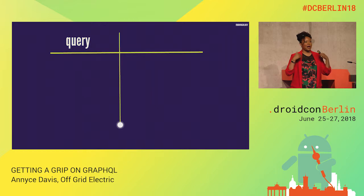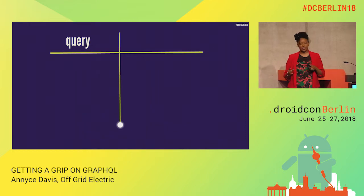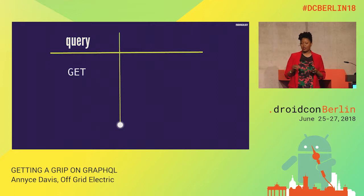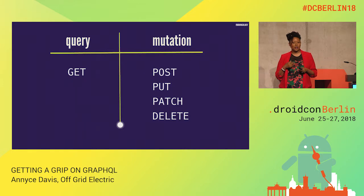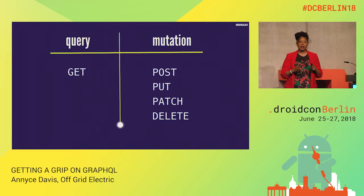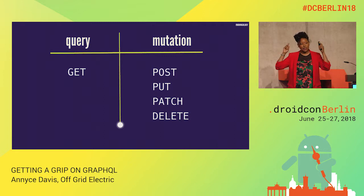Now let's compare GraphQL with REST. A query in GraphQL is more like making a GET with REST, and a mutation is related to POST, PUT, PATCH, and DELETE. When I first heard the word 'mutation' I thought of X-Men and Ninja Turtles, but it really has nothing to do with that — it's about mutating or changing the state of your data. It's helpful to keep this in mind when working with GraphQL so you'll know which operation to choose.